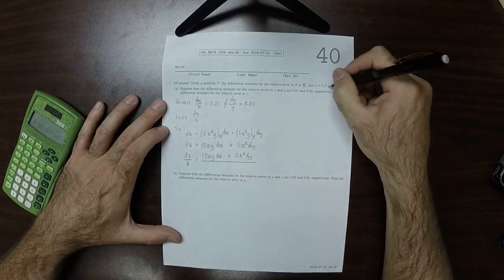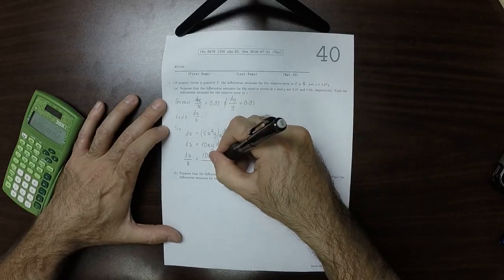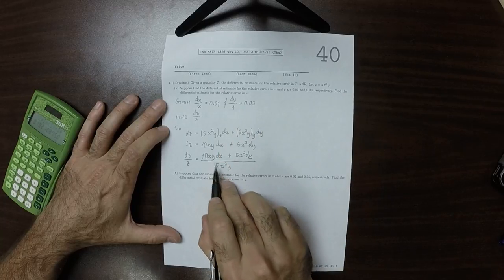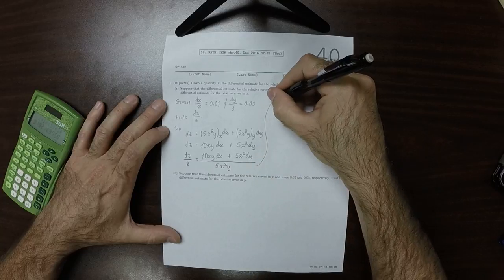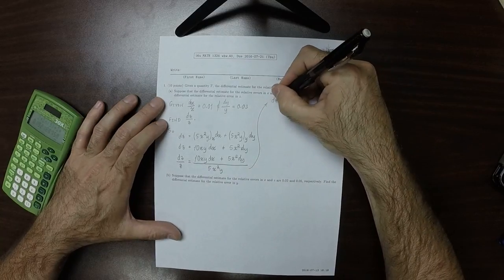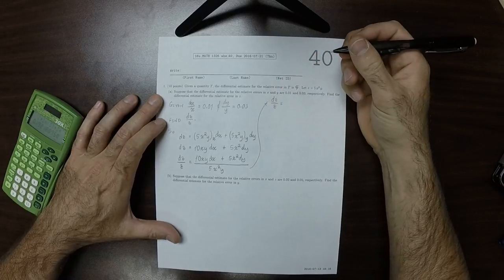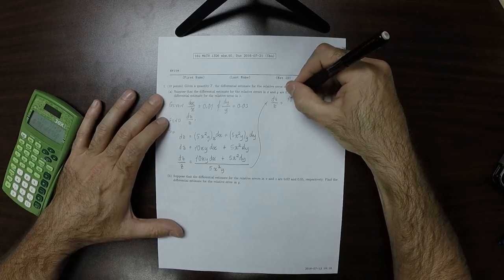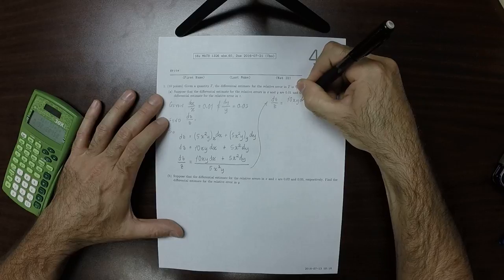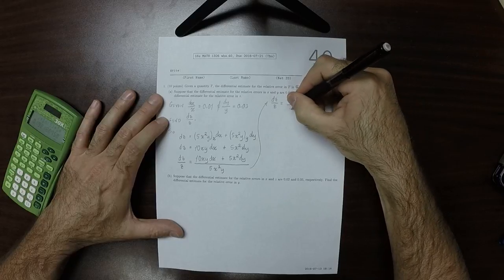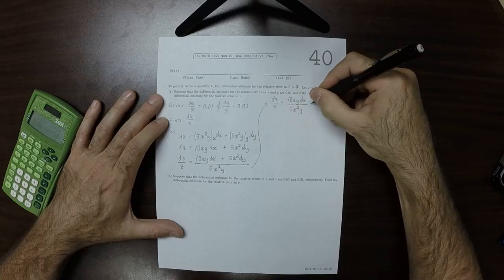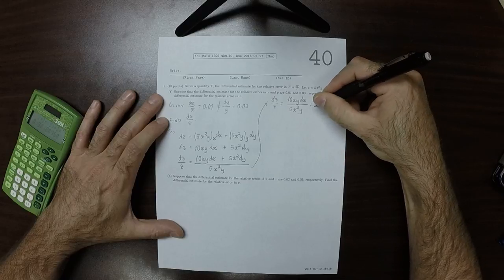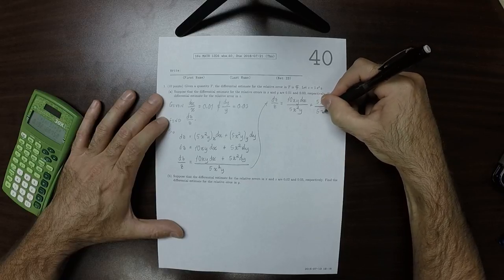And we're going to divide this by z, but now I'm going to use the x's and y's. So that would be 5x squared y. So dz over z is 10xy dx divided by 5x squared y plus 5x squared dy divided by 5x squared y.